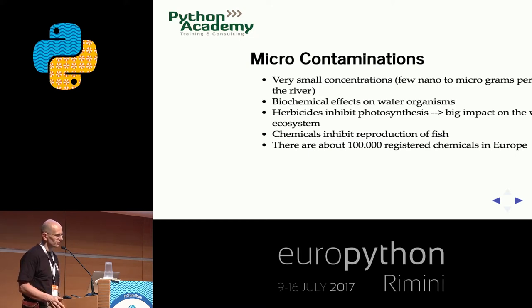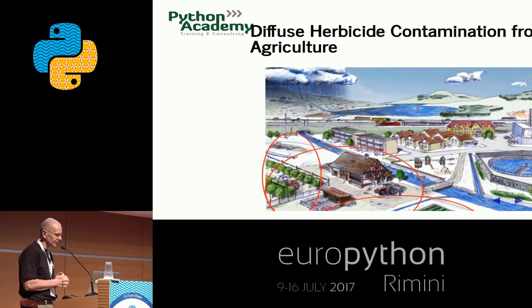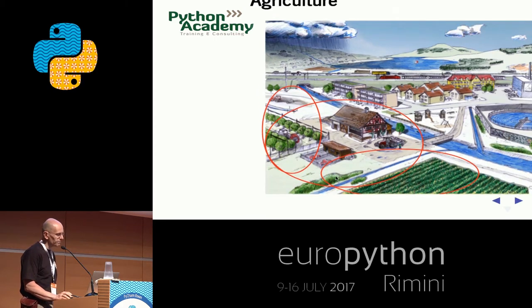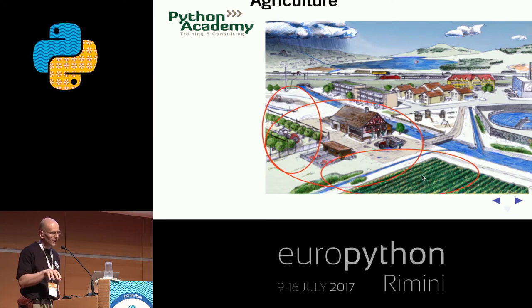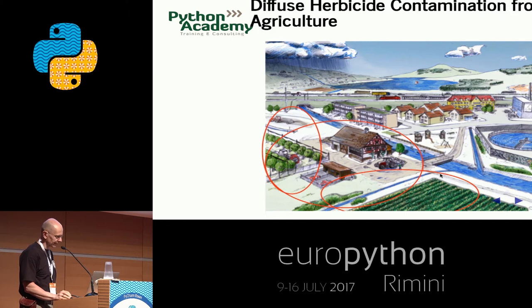This simulation model should be able to model most of these substances. Some of the sources include diffuse herbicide combinations from agriculture. You can see agriculture at different places — lots of chemicals like herbicides are applied and moved by precipitation. Not everything is used for its purpose; depending on rain, some is washed into the river. This is diffuse because it's spread over a larger area.